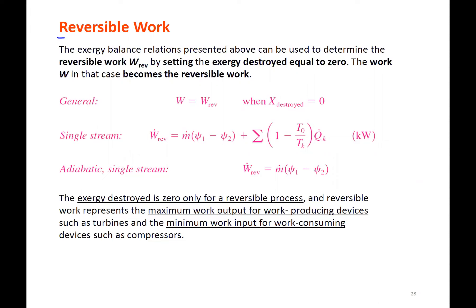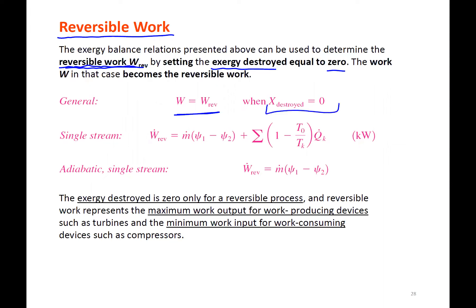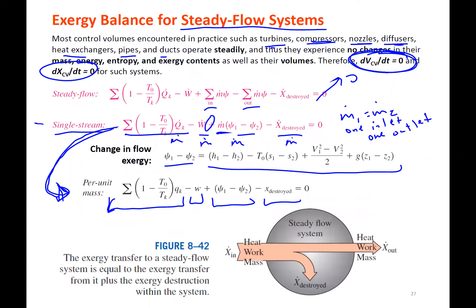Here we have the case of reversible work — this is the special case where we're looking for reversible work. We set X-destroyed to zero in the exergy balance. We set our work in the exergy balance to work-reversible and X-destroyed equals zero. So we're applying the equation and reducing it to what that reversible work would look like.